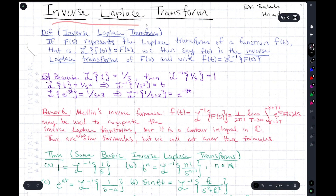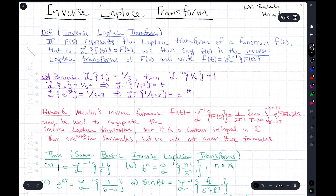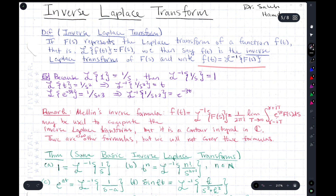Definition: if capital F(s) represents the Laplace transform of the function f(t), we then say that f(t) is the inverse Laplace transform of capital F(s), and we write this with the notation using a negative one — which does not mean reciprocal, but rather the inverse. So it's exactly what you'd expect: the inverse Laplace transform just goes in reverse.